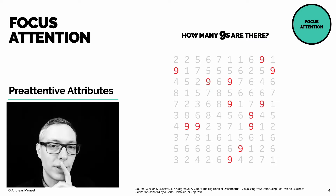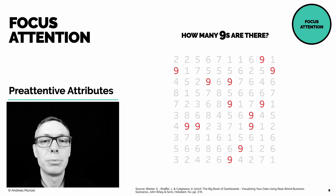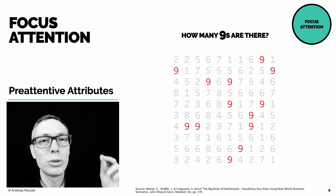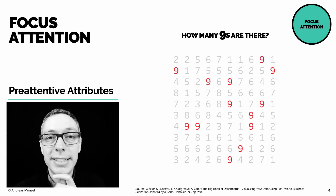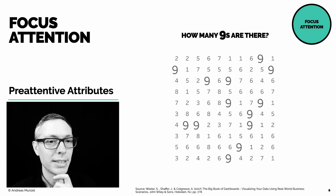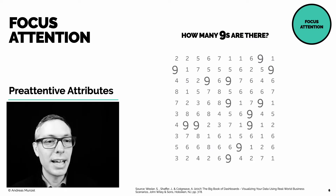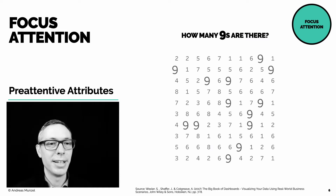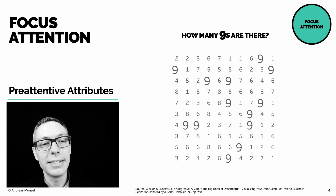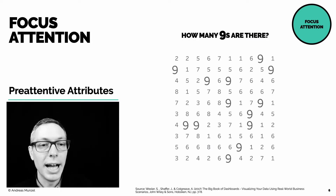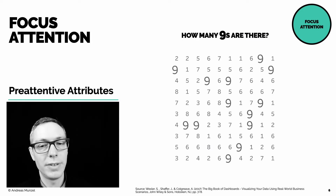When we look at a scene, we process these attributes in under 250 milliseconds. Let's have a look at another pre-attentive attribute: the nines are now at a different size than the other numbers. So size and hue are two very powerful pre-attentive attributes.